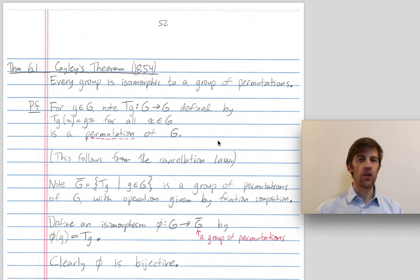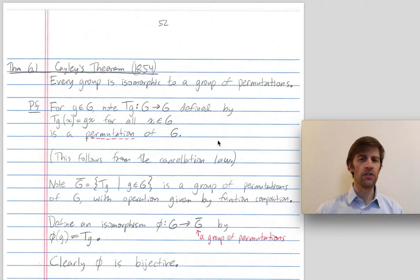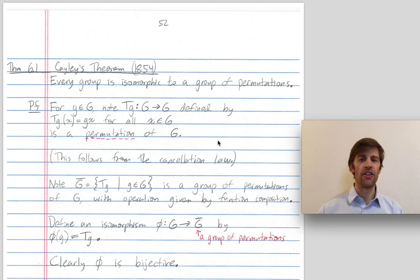So let's give ourselves an arbitrary group and ask how we're going to find a group of permutations that has the same structure — that's isomorphic to it. Let me start going through the proof of this theorem, and then we'll quickly leave to go to an example and then return to the proof.